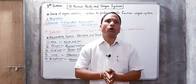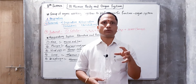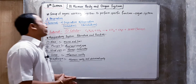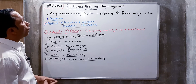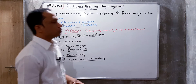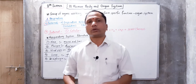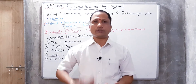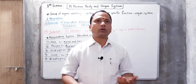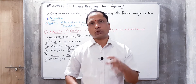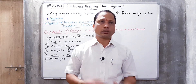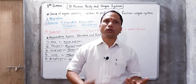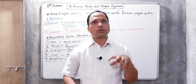An organ system is made up of tissues. The hierarchy is: cell, tissue, organ, organ system, and finally body. A group of organs working together to perform a specific function is known as the organ system. So many organ systems are present in our body, and all these organ systems are internally connected to one another. That is why our body is healthy and we can perform different types of activities.